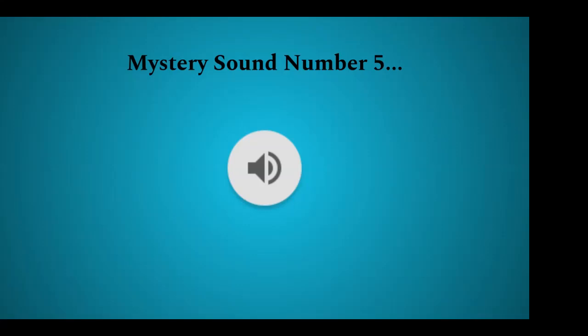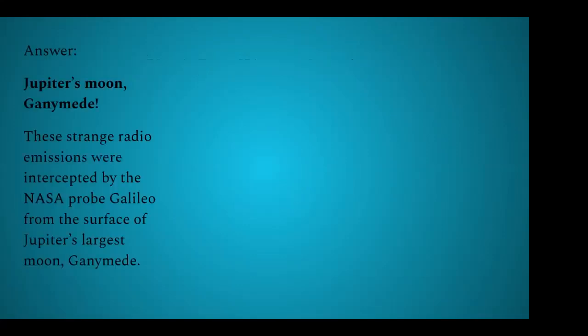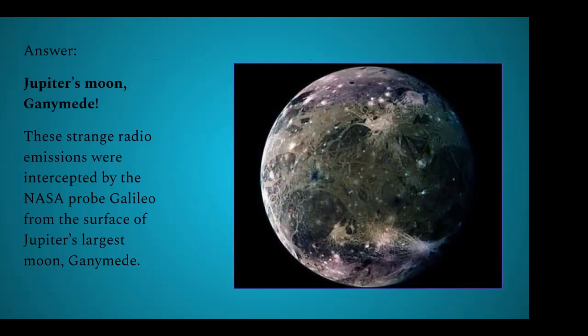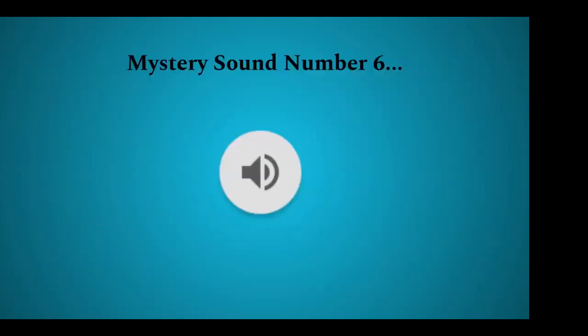Here's our fifth mystery sound. So that was a very odd and jarring sound, wasn't it? These strange sounds come from the surface of Jupiter's moon Ganymede. These strange radio emissions were intercepted by the NASA probe Galileo from the surface of the moon. Like I said, these are radio waves that were transmitted from the surface of that moon.